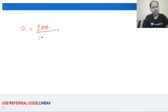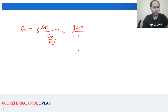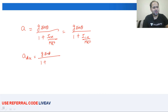Acceleration का formula होता है: a = g sinθ / (1 + I_CM / MR²). अब अगर disc की बात करें, तो disc का moment of inertia है MR²/2, तो यह आएगा g sinθ / (1 + 1/2) = 2/3 g sinθ, which is 0.67 g sinθ.